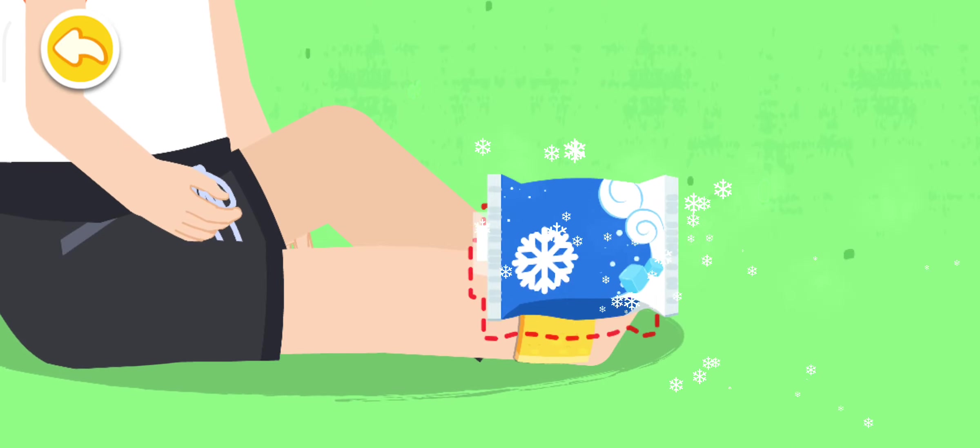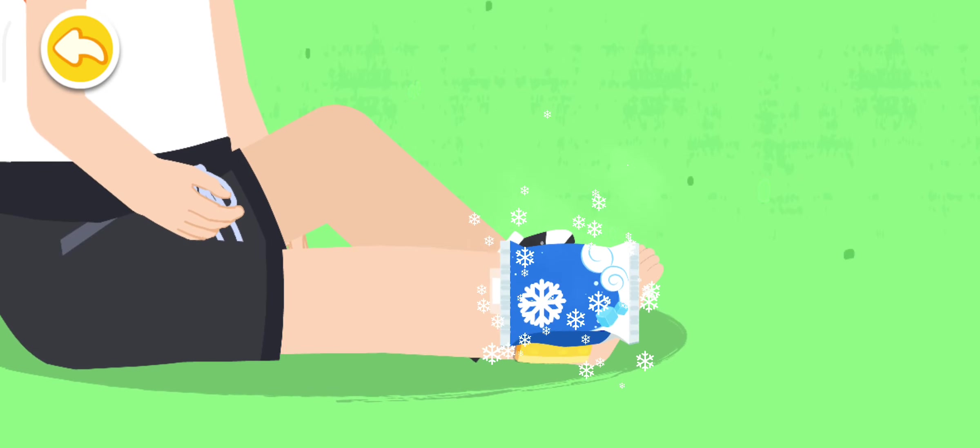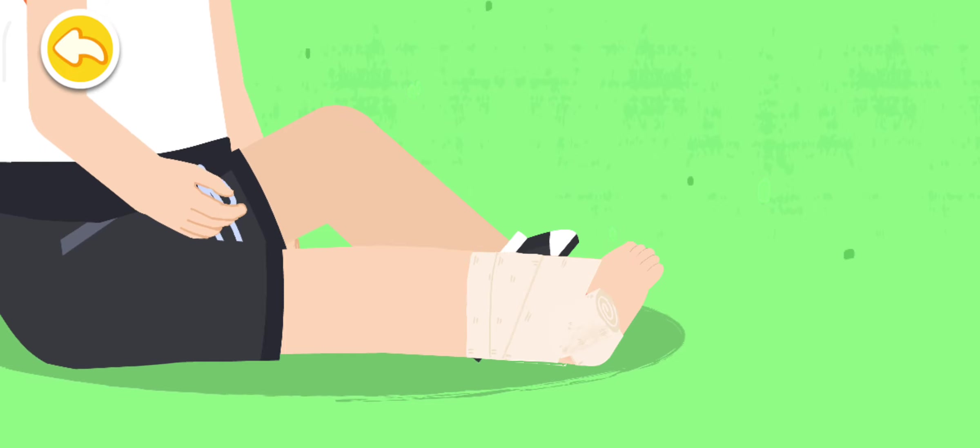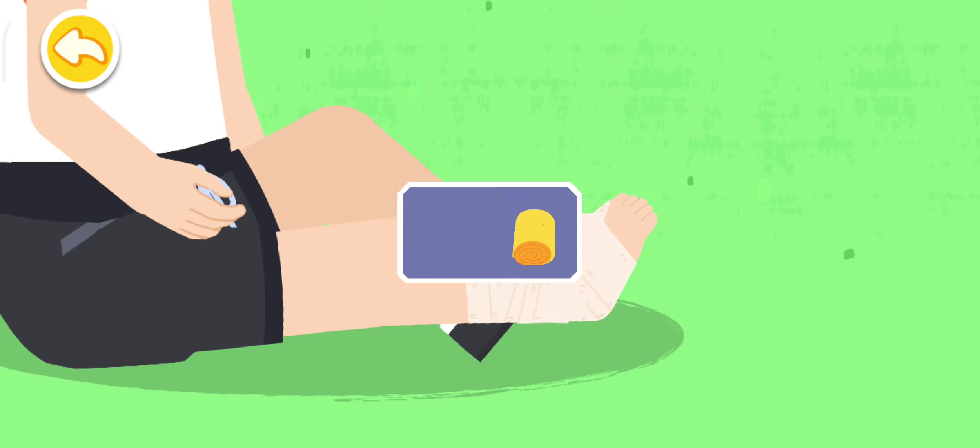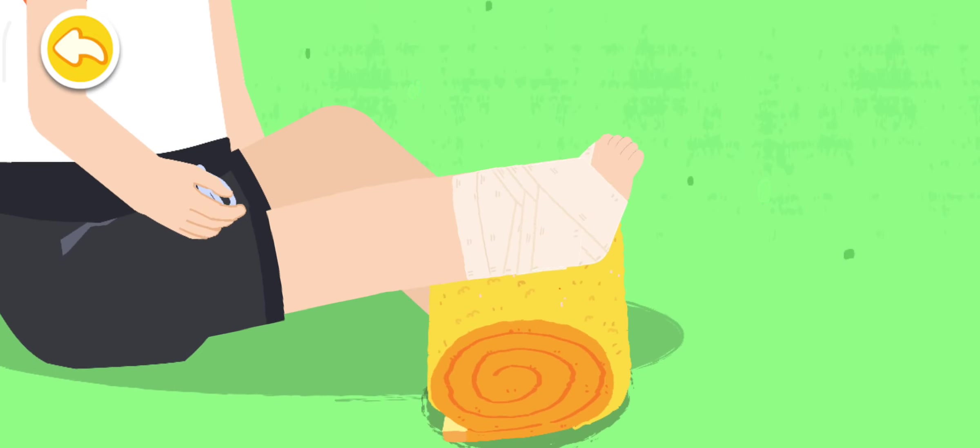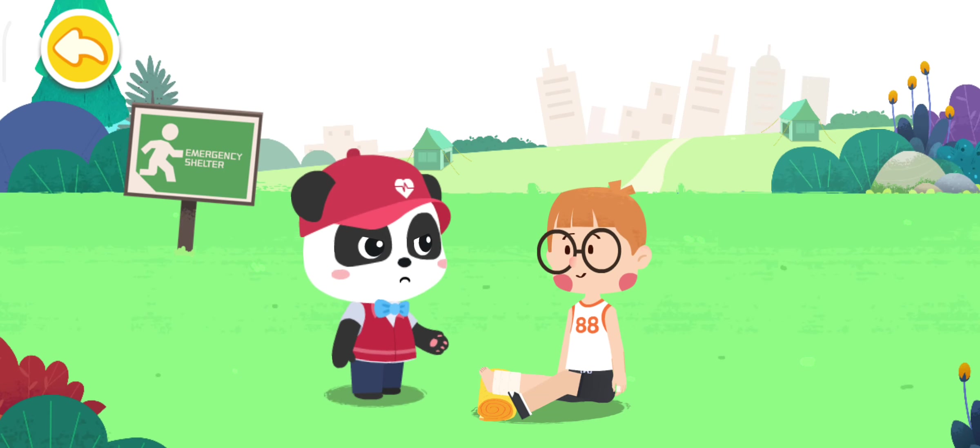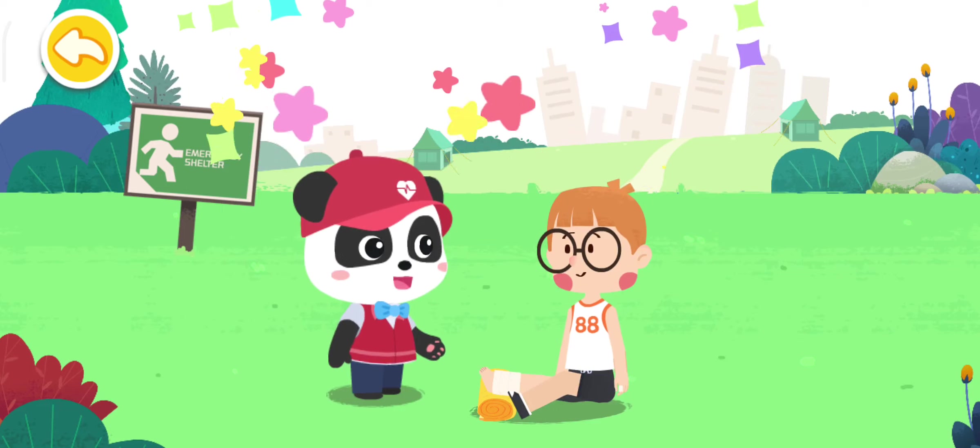Wrap the ice pack with a towel and put it on the sprained ankle to reduce the swelling and pain. Drag the bandage to fix the wound with the figure of eight bandage method. Elevate the injured foot to help with ankle recovery. Do not exercise after the sprain, otherwise it will affect the ankle recovery. Okay, thank you Kiki. You're welcome.